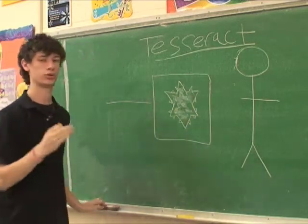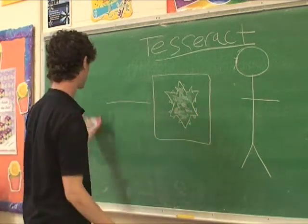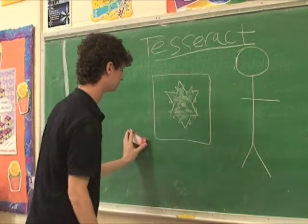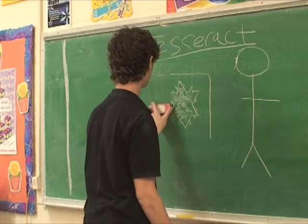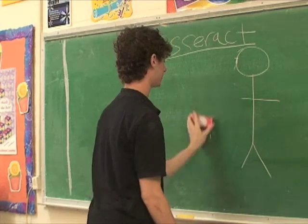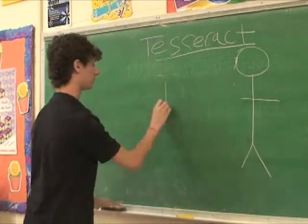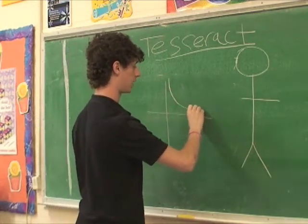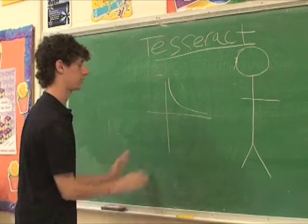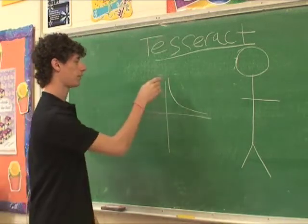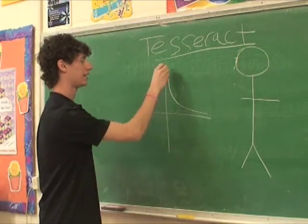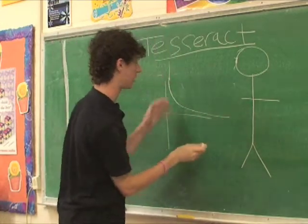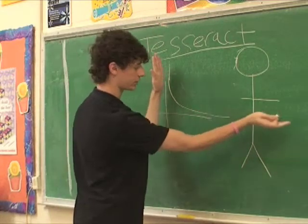The same thing holds true one dimension higher. There is a function — for those of you taking math, you may have heard of it — the hyperbola, 1 over x. If we make a coordinate system and graph 1 over x, looking at just the positive section, we know that it has infinite length, because this line expands infinitely in both directions.